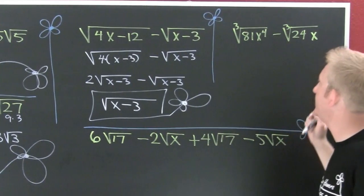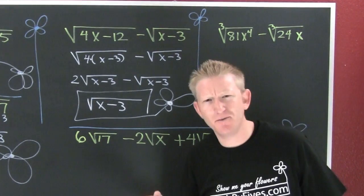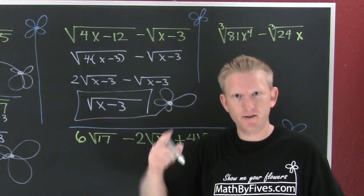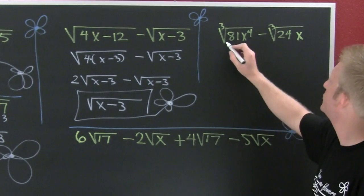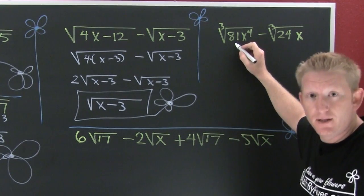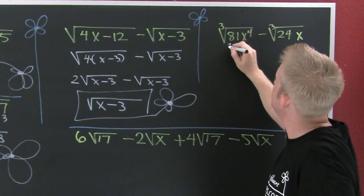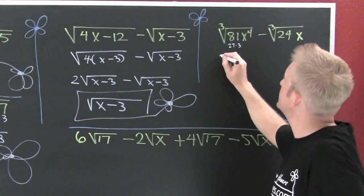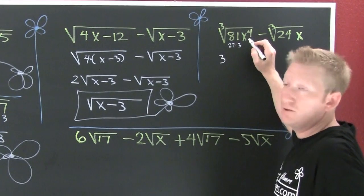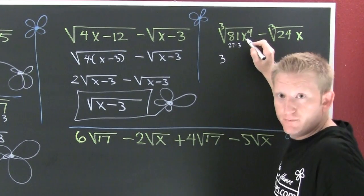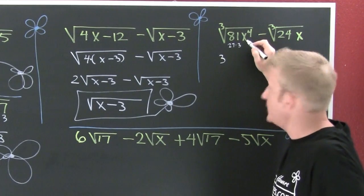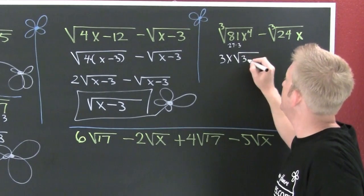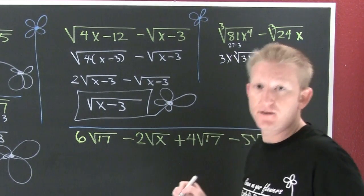These work with an index of three too. Up here I have the third root of 81 times x to the fourth. For 81, that's 27 times 3, so the third root of 27 is 3 — that comes out. For x to the fourth, for every set of three x's I get to take one x out, so one x comes out and we have three and one x left under that third root: giving us 3x times the third root of 3x.